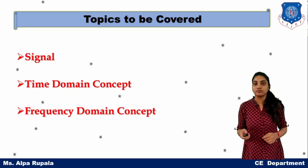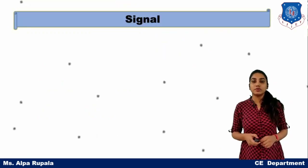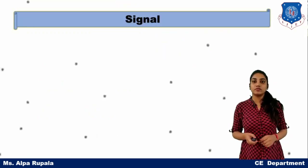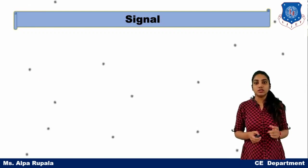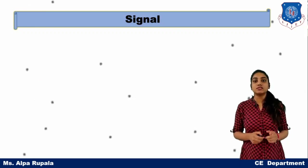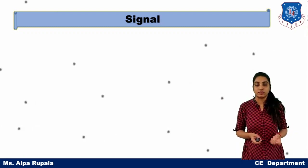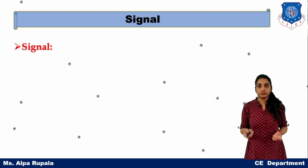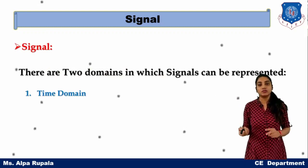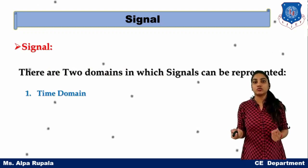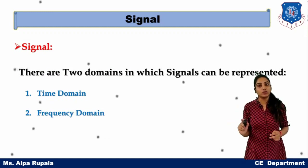First of all, what is the signal? The signal is nothing but electric or electromagnetic waves. There are basically two types of signal representation: time domain and frequency domain.